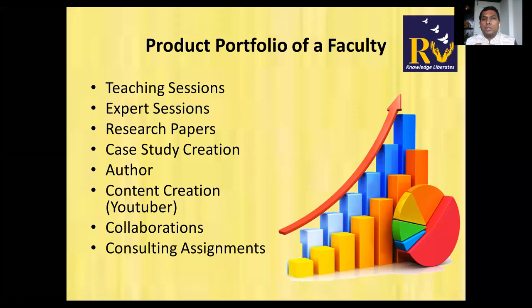I'll also try to incorporate a few questions that came up in yesterday's session from the other panelists. So let's get started. I want to revisit two slides from the first part of the presentation we did last week — a small touch-up — because to talk about product portfolio, we need to understand the BCG matrix and the life cycle of a product.